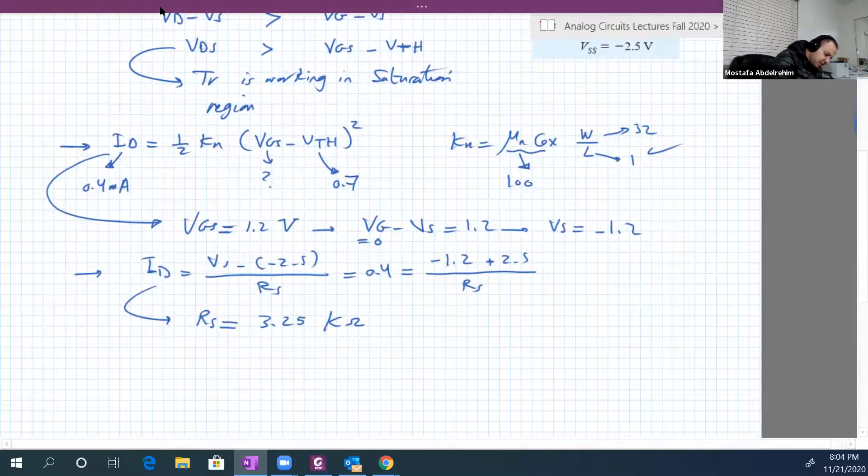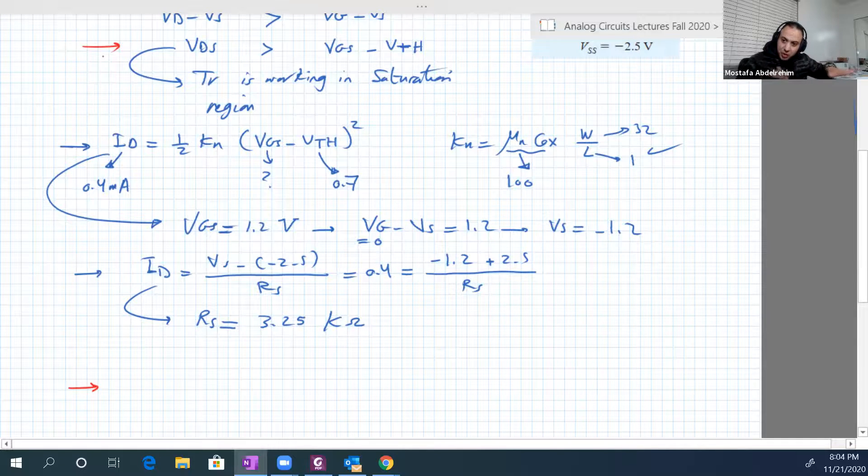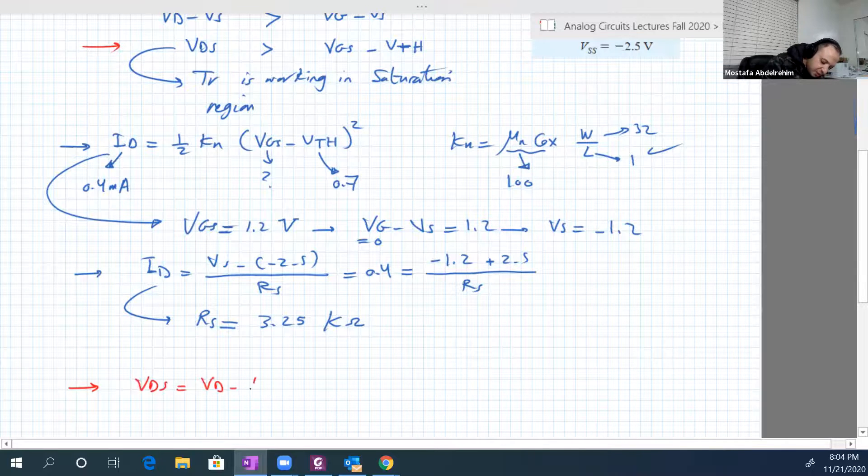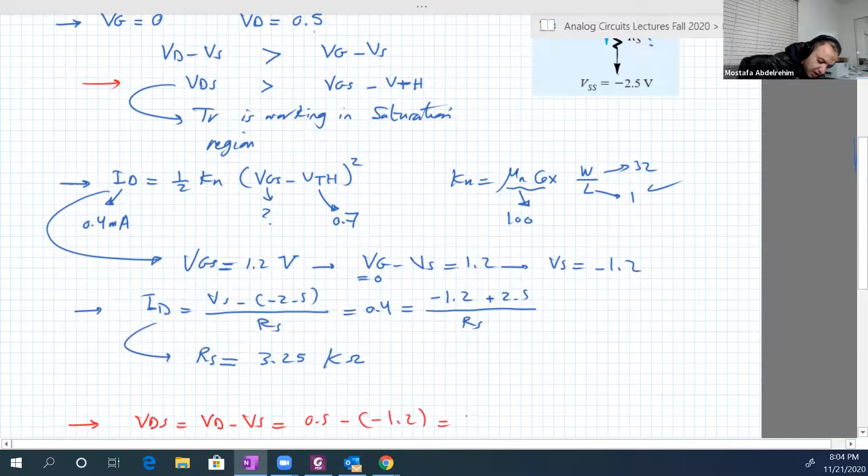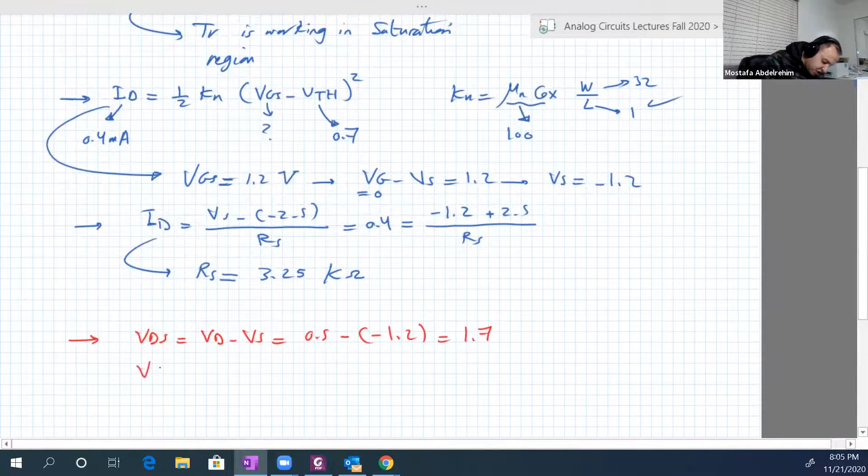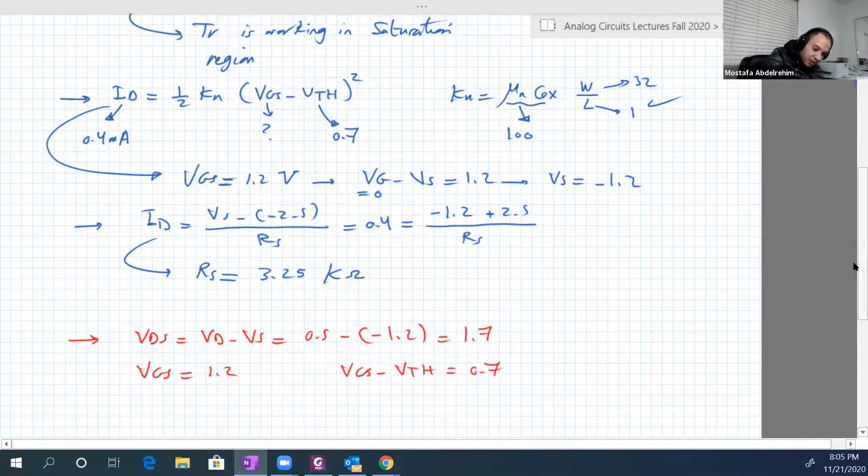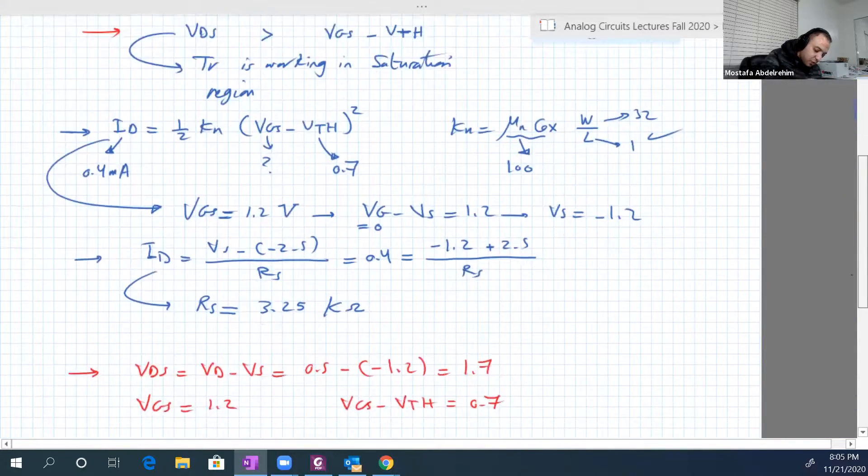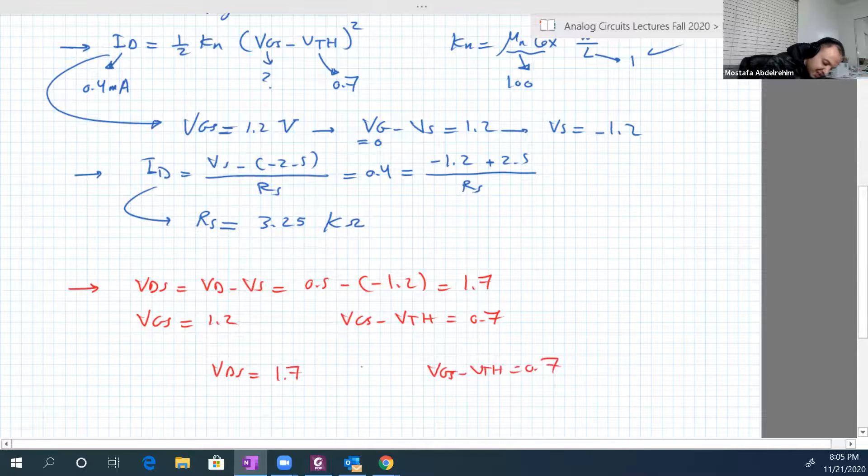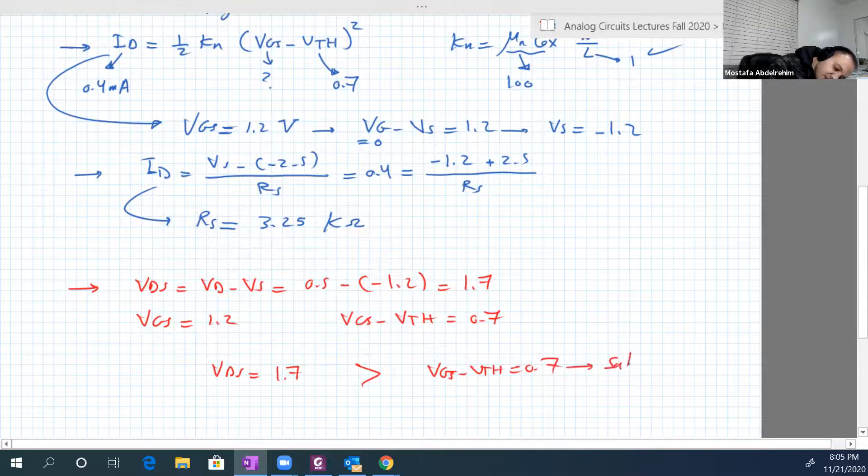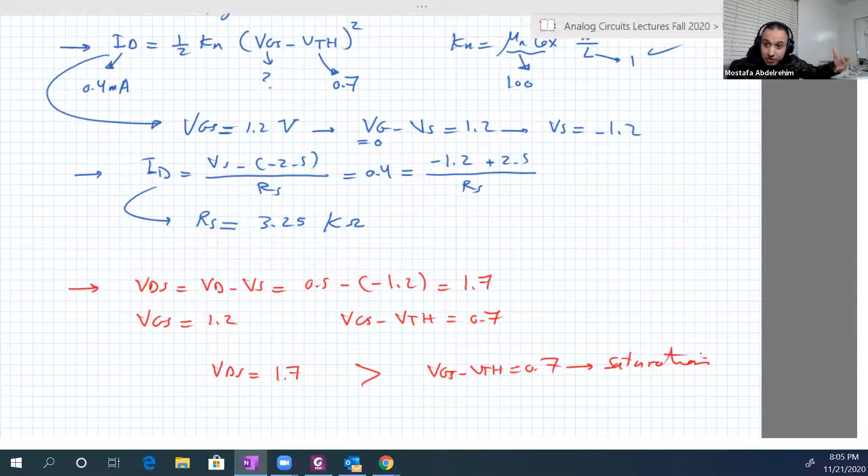Now we just want to check, it's not part of the problem but to check ourselves. We need to see that VDS is larger than VGS minus V threshold. VDS equals VD minus VS, so VD is 0.5 and VS is minus 1.2, so this is 1.7. VGS is 1.2, VGS minus V threshold is 0.5. Let's compare them: VDS which is 1.7 and here is VGS minus V threshold which is 0.5. That's of course larger, so the assumption that we introduced is correct.